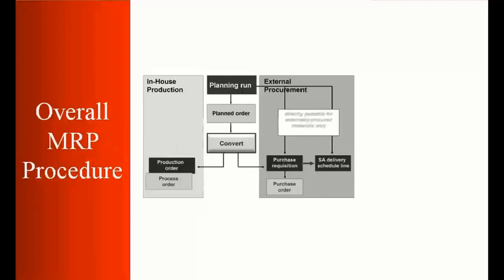So here you can see, as I said, it can be in-house, it can be external. Now when the MRP runs, what MRP will do is anything which is in-house - here you have in-house, here you have external - MRP will run, and anything which is in-house, it will create a planned order for that. And planned order will be converted to a production order.